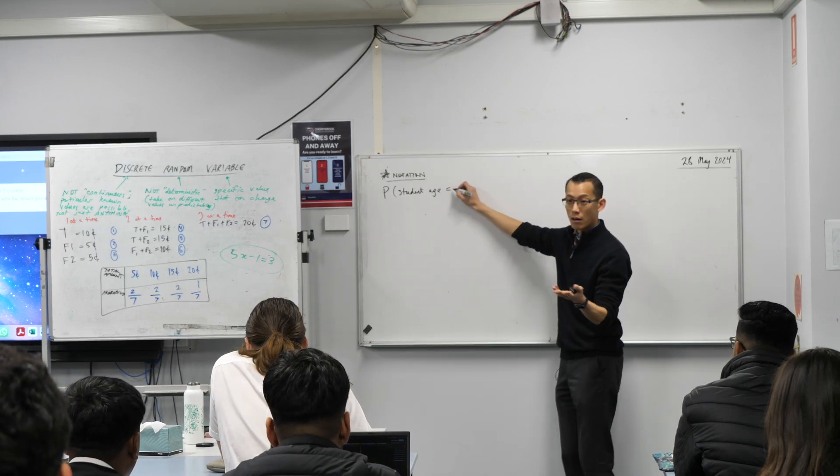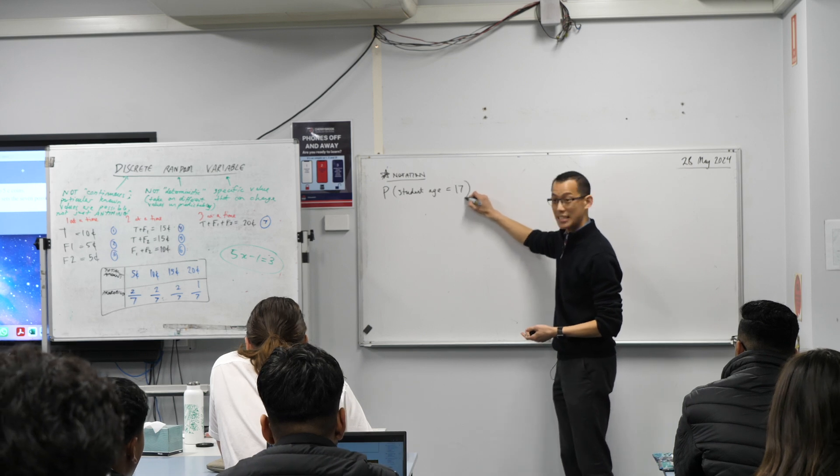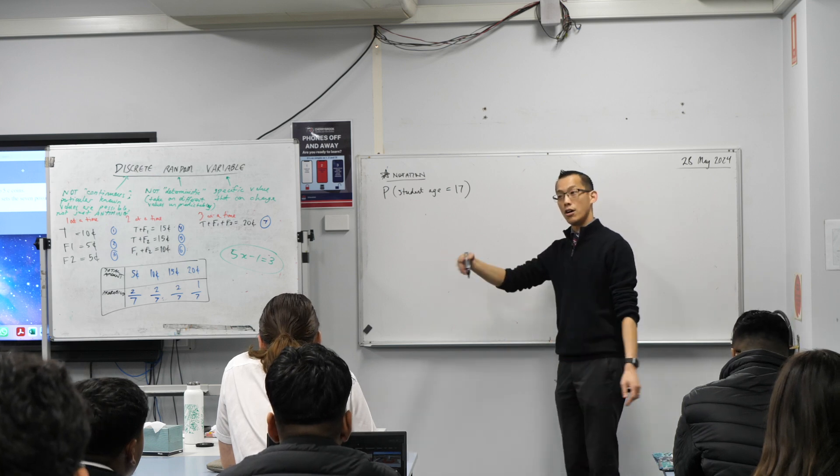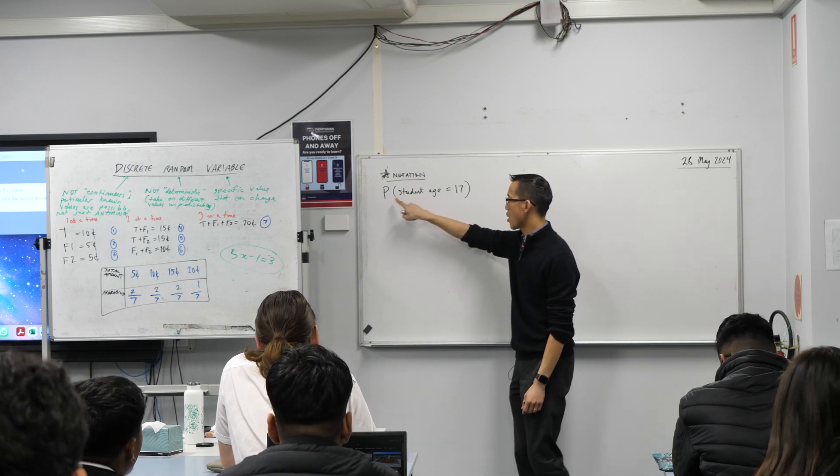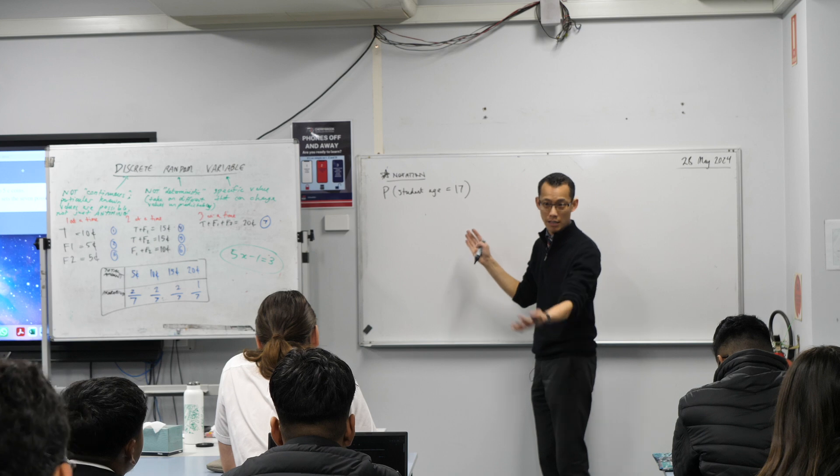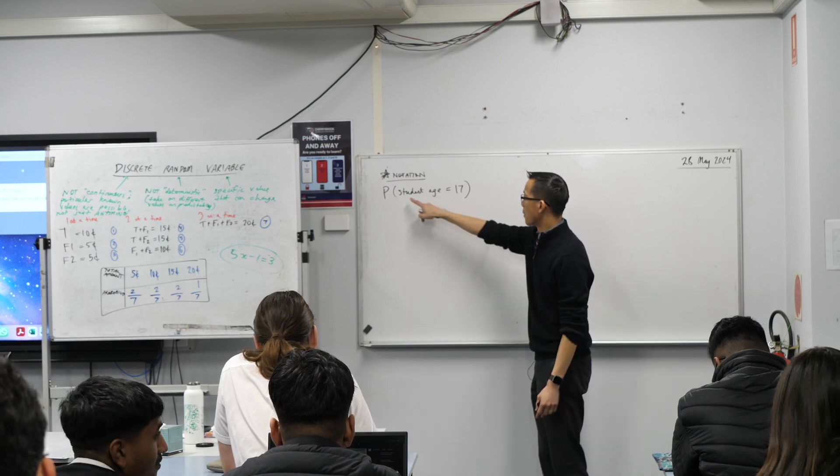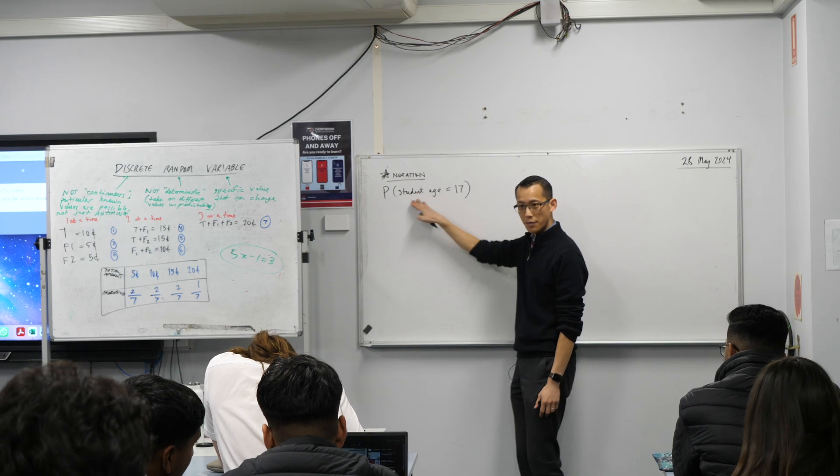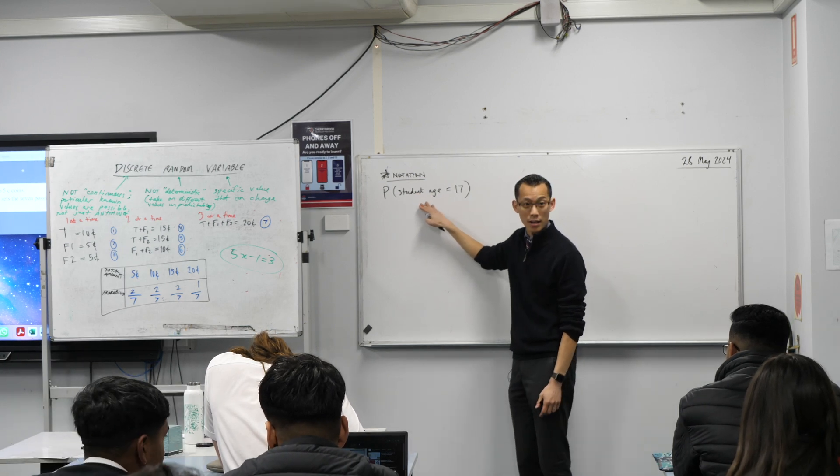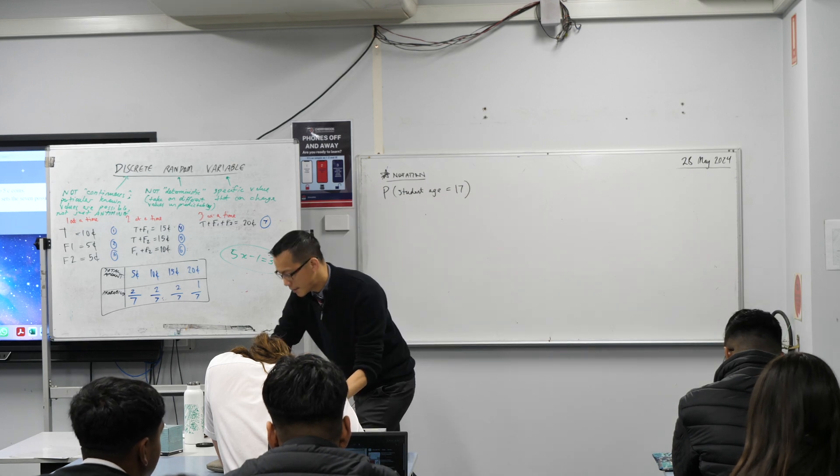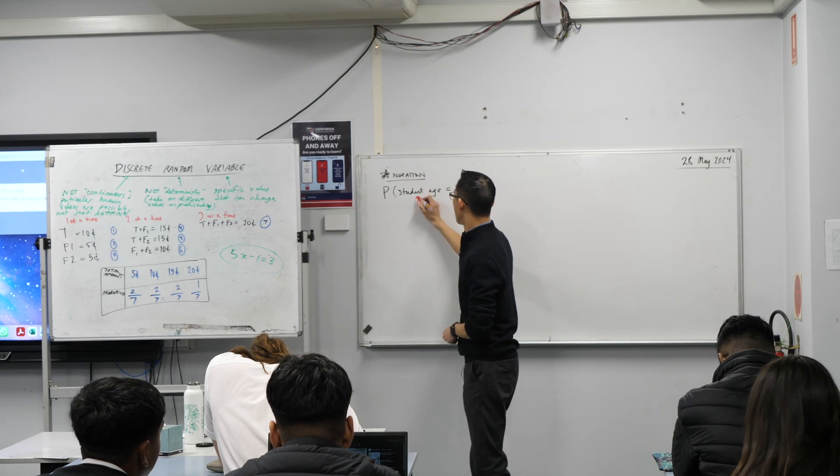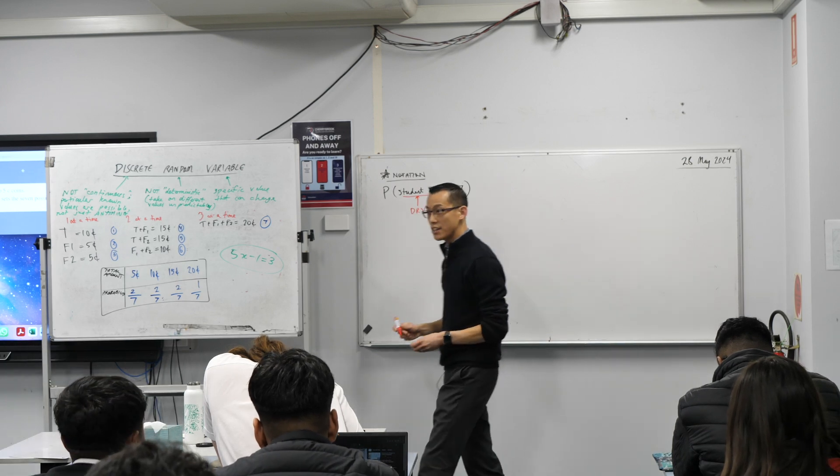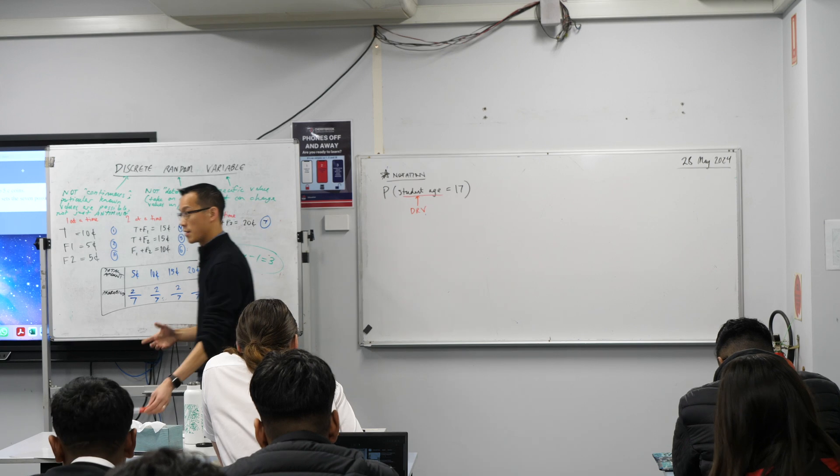But when I specify in years, I can say the probability of it equaling 17, that's discrete. There are chunks, right? Now, normally, we'd be quite happy to just say P of 17. And in the context of a question, that'd be fine. But I'm going to ask you to write down here, student age equals, because we need to specify this thing that's being measured here. And that, right there, that there is the discrete random variable.